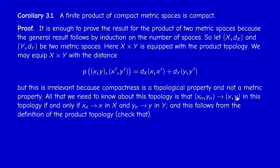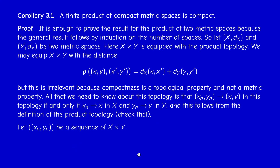It is easy to check that a sequence of pairs (x_n, y_n) in the product converges to (x, y) if and only if each component converges to the corresponding limit. This is by design of the product topology, and can be verified using the sum distance. We then prove X × Y is sequentially compact — here we need the metrizability assumption.